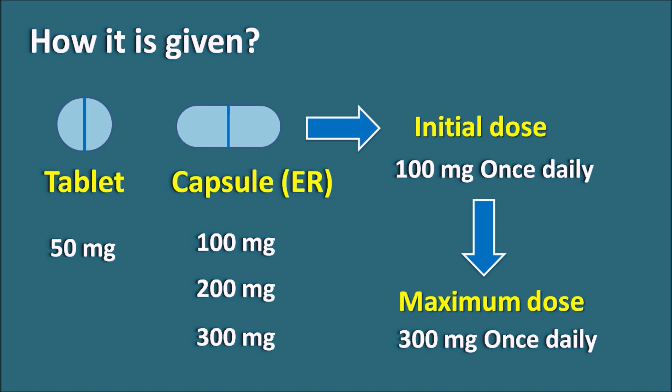In summary, tramadol is an opioid agonist used to treat moderate to severe pain. Whenever analgesic action is required throughout the day, tramadol can be given. Compared with other opiates, tramadol has less euphoria. However, this drug can increase suicidal ideation, and can precipitate serotonin syndrome and seizures. Just like other opiates, it can also produce respiratory depression and anaphylactic reactions. It acts as an agonist on mu receptors, producing central analgesia, and also inhibits the reuptake of 5-HT and norepinephrine. The extended-release capsule is initiated at 100 mg and the maximum dose is 300 mg.